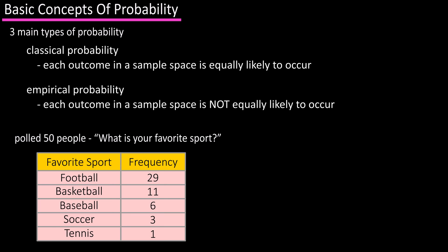The formula for empirical probability is the probability of event equals frequency for the class, or the event, divided by the total of the frequencies. So the probability of football being a person's favorite sport is 29 divided by 50, which is 0.58.